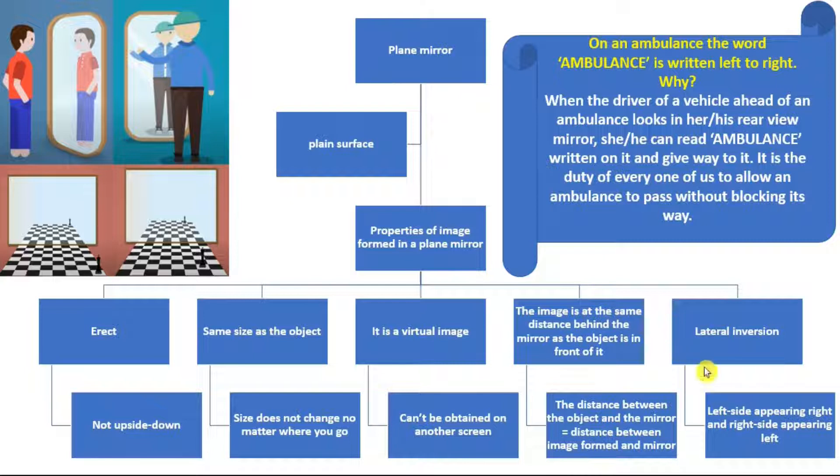Then we have lateral inversion which means the left side of your image appears right and right side appears left. Now a really important question formed using this lateral inversion property is that on an ambulance the word ambulance is written from left to right. Why?